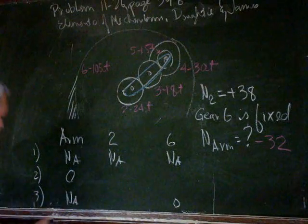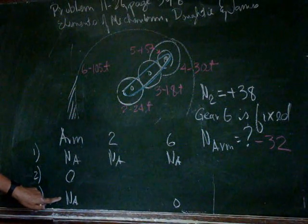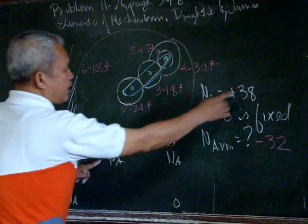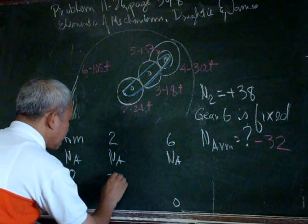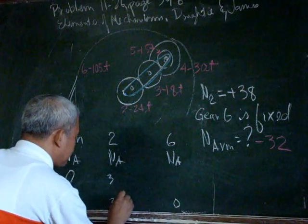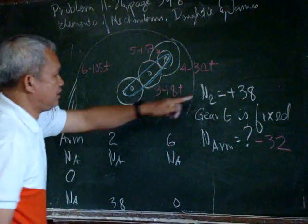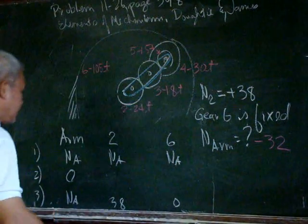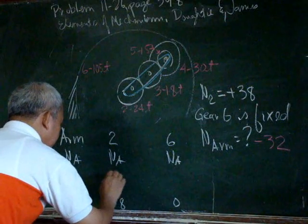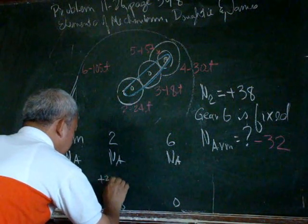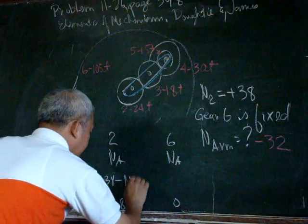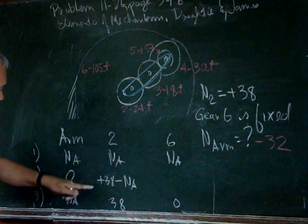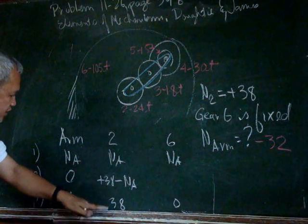And the final answer is that the arm has to rotate n sub a. And n sub 2 has to rotate 38 times as a final number of rotation. So we write 38 here. It has to have n_a plus 38 minus n_a. So n_a plus 38 minus n_a gives us 38.